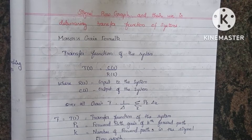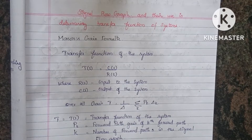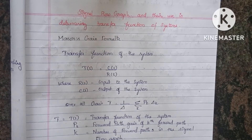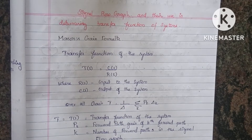R(s) is the input of the system and C(s) is the output of the system. The overall gain — the transfer function — is calculated. This covers the number of individual loops, non-touching loops, and the number of forward paths.